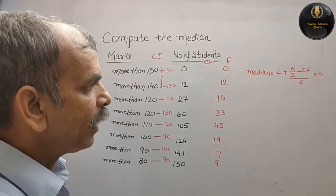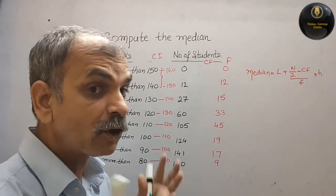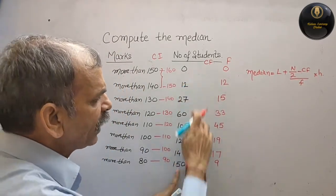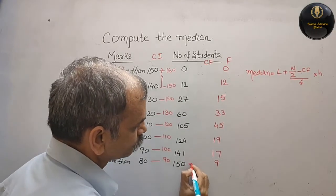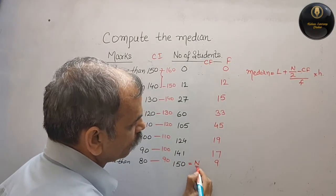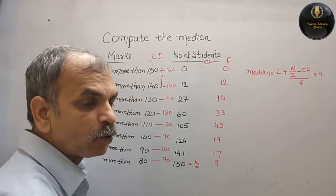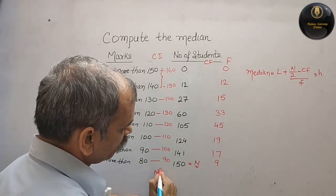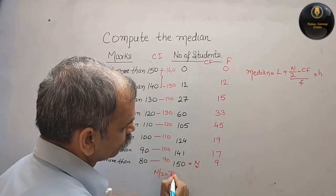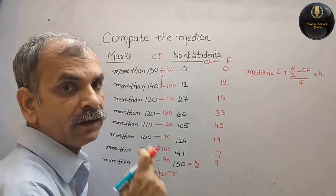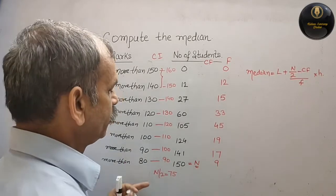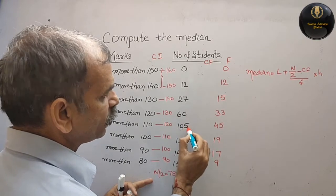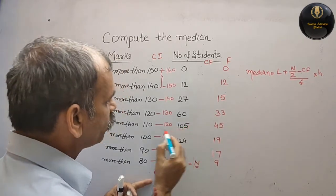Now they have already given 150 cumulative, that means last one is your n. So n is 150, n by 2 is 75. N by 2 is 75, in the 75 wale, median class bana. So you can see here it's between 60 and 105, so 105 mein bana.